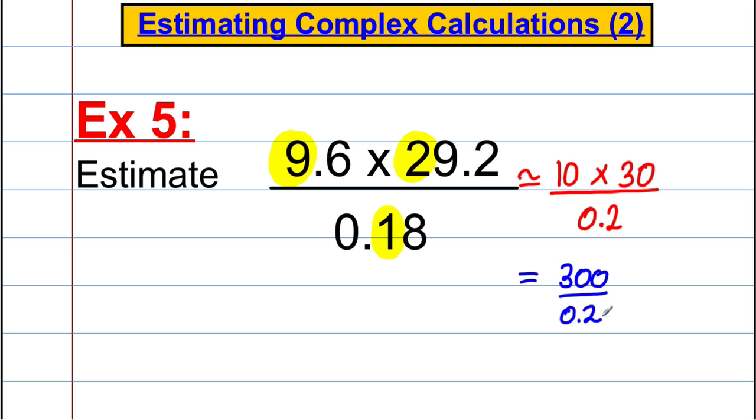And I don't like the decimal on the bottom. So I'm going to multiply the numerator and denominator by 10 and say that's the same as 3,000 divided by 2. And 3,000 divided by 2 is 1,500. So again, we're done for this question.